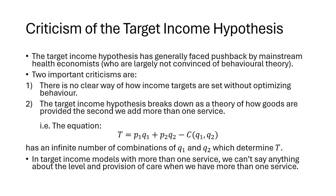The target income hypothesis is generally facing pushback from mainstream health economists who are not convinced of behavioral theory more generally speaking. Two important criticisms are: first, there is no clear way with regards to how income targets are set without defining some type of optimizing behavior beforehand. Further, the target income hypothesis breaks down as a theory of how healthcare services are provided if we add more than one healthcare service.